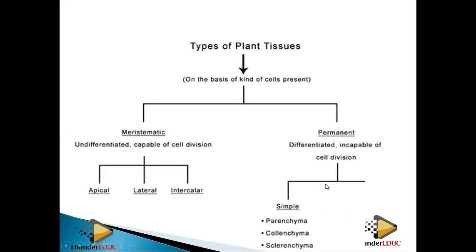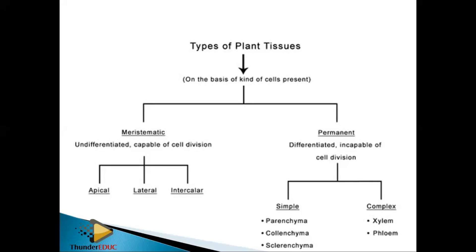In permanent tissues, we have simple tissues — made of one cell type — which include parenchyma, collenchyma, and sclerenchyma. These have different modifications and serve different purposes in the plant. Then in complex tissues, which are made of more than one cell type, you have the xylem and phloem. One is responsible for transportation of water and mineral salts, and the other for transportation of manufactured food.